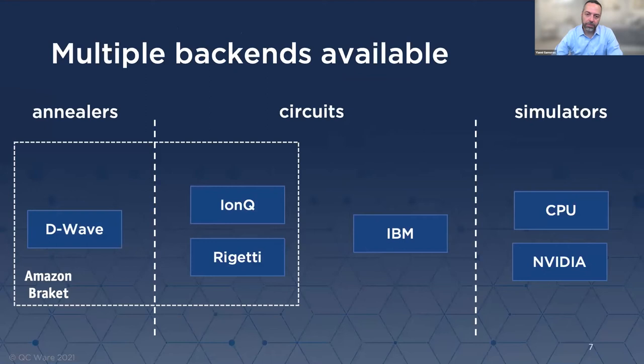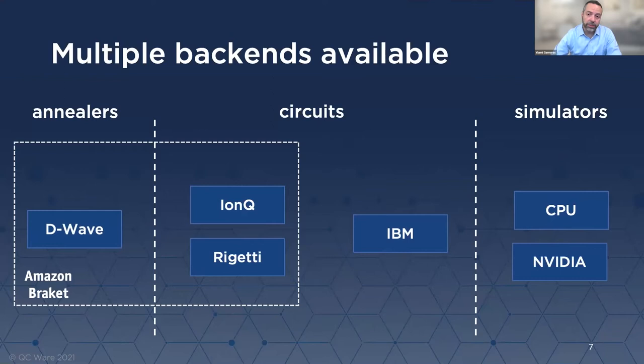These are the backends currently available on Forge. A big set of these backends is coming from Amazon Bracket and our integration with it — that's D-Wave on the annealing side, and IonQ and Rigetti on the circuits side. We also have a partnership with IBM. The partnership with IBM is a little bit different in the sense that the user actually needs to have IBM credentials and bring those credentials into Forge in order to connect to the IBM hardware that they have permissions to connect to. We also provide some simulators.